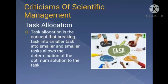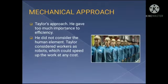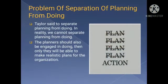Here we see the criticisms of scientific management. Task Allocation is the concept of breaking tasks into smaller and smaller tasks, followed by determination of the optimum solution to the task. The next criticism is the Problem of Unity of Command — Taylor used functional foremanship, so a worker has to report to 8 bosses, which breaks the principle of unity of command where a worker should report to only 1 boss, creating confusion in the organization. The next criticism is the Mechanical Approach — Taylor's approach gave too much importance to efficiency and did not consider the human element; he considered workers as robots who could speed up work at any cost. The next criticism is the Problem of Separation of Planning from Doing — in reality, we cannot separate planning from doing, as the planner should also be engaged in doing.